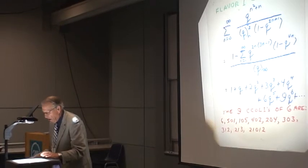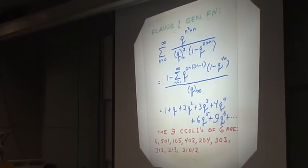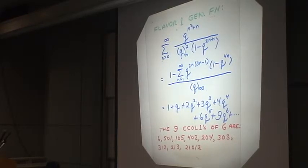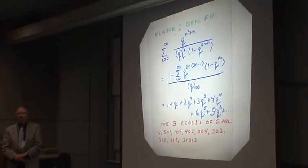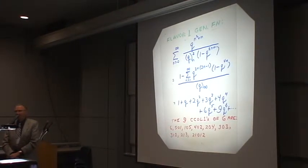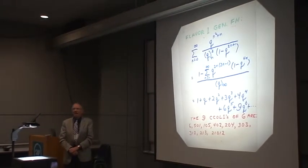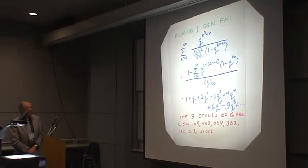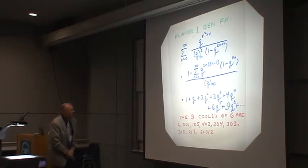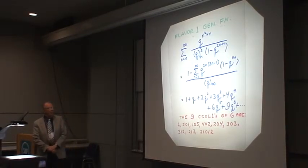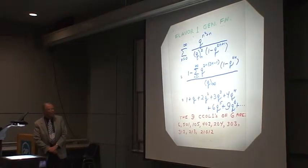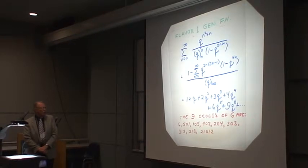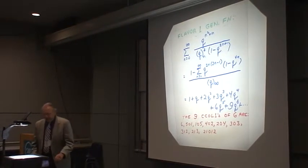Here is Flavor 1, and its generating function is this — another false theta series. If you were to change all the signs to plus, it is equal to an instance of Jacobi's triple product, and so it would come out to be an infinite product related to modulus 12. But the signs are wrong here, so the numerator does not come to an infinite product. You can see the series expansion up to Q to the 6th, and below I've written the Flavor 1 concave compositions for the number six.